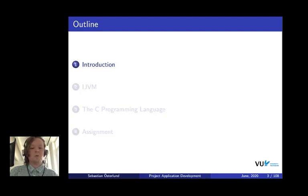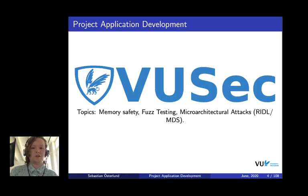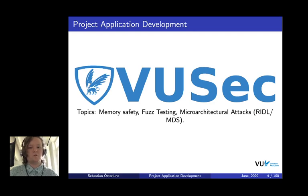My name is Sebastian Estelund, I'm a PhD student in the FuSec group. My research area is mainly memory safety, fast testing, and I've done some micro-architectural attacks — you might have heard about Riddle or MDS in the news.